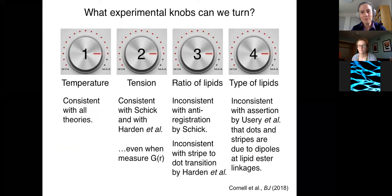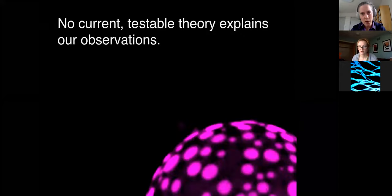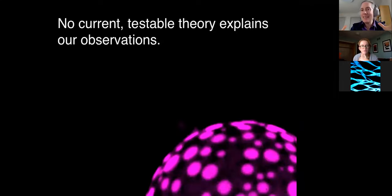Let's review what have we got. Temperature says it's consistent with everything. Tension is consistent with all theories that describe it. But the ratio of lipids is inconsistent with all theories that describe that. And when we think about the types of lipid, it's also inconsistent with the assertion that dots and stripes are due to the dipoles of the ester linkages. How should we think about this? Those broad classes of imagining that there's a balance of forces or that the lipid composition is coupled with the curvature. Those are great ideas. And I feel like one of those must be correct. But of course, the devil's in the details about the assumptions in each particular theory. To date, no single theory currently explains all of our observations. So how should you think about that?